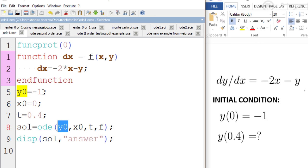x0 is the initial value of x, which in this example is 0, so I assign x0 = 0. t is the value of x for which you need to find out y, and we need to find y when x equals 0.4, so t = 0.4. The most important argument is f, which is your differential equation.